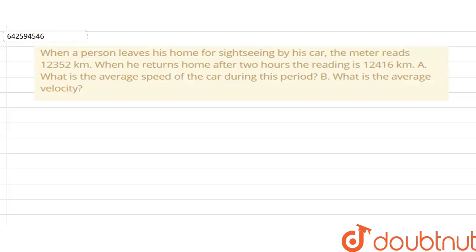When a person leaves his home for sightseeing by his car, the meter reads 12,352 kilometers. When he returns home after two hours, the reading is 12,416 kilometers.